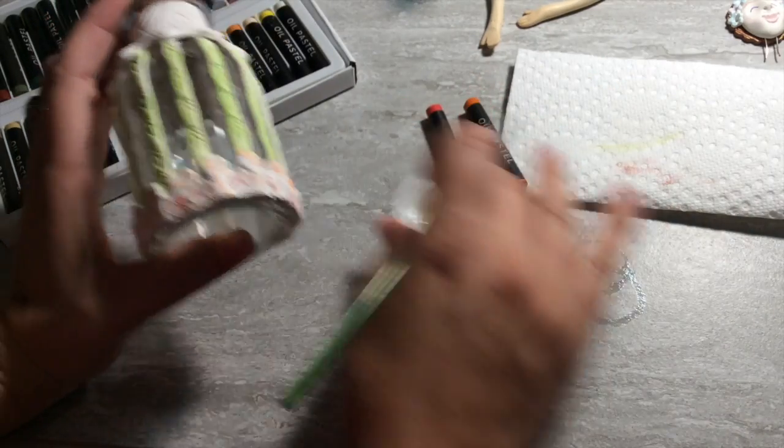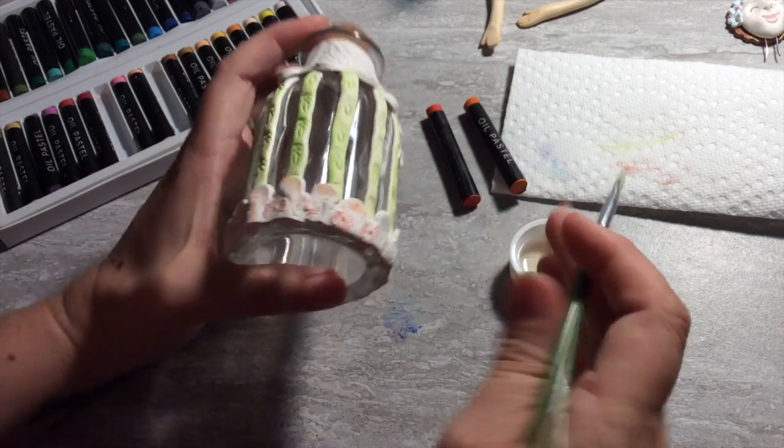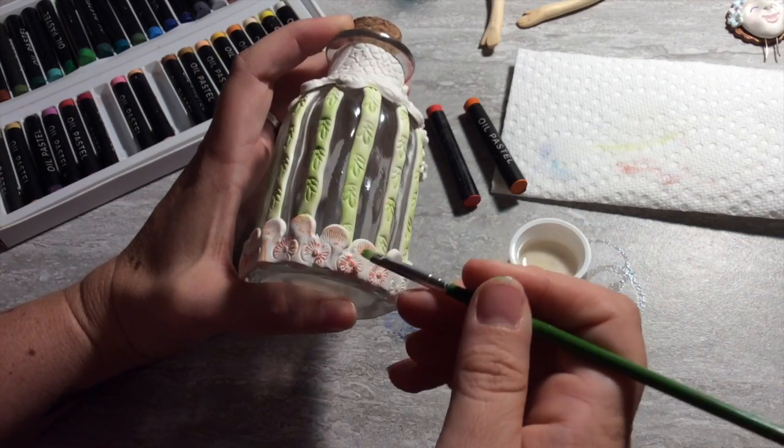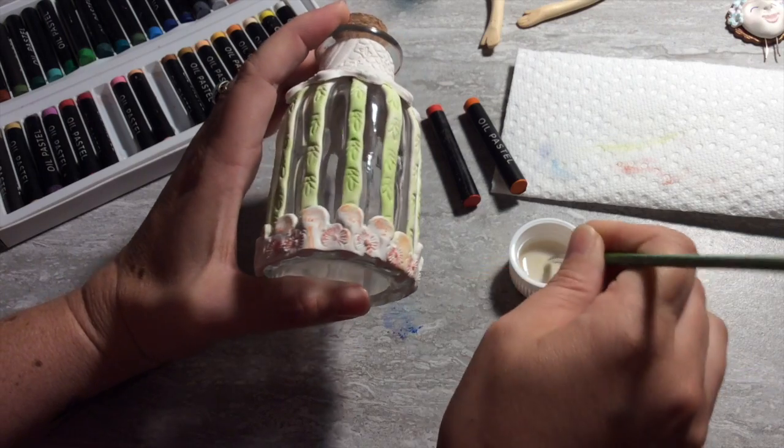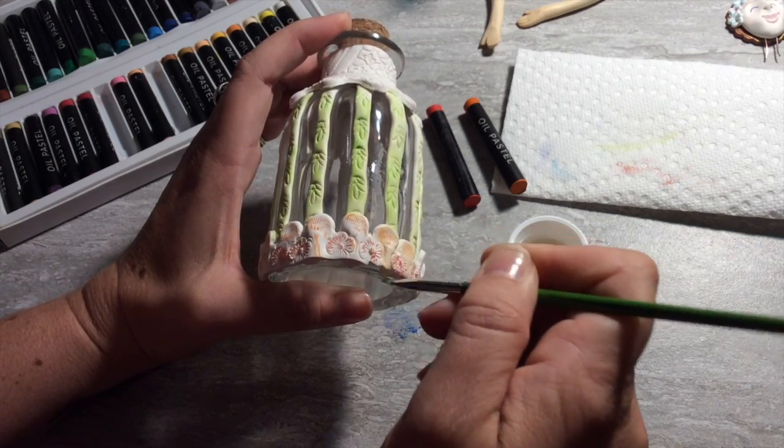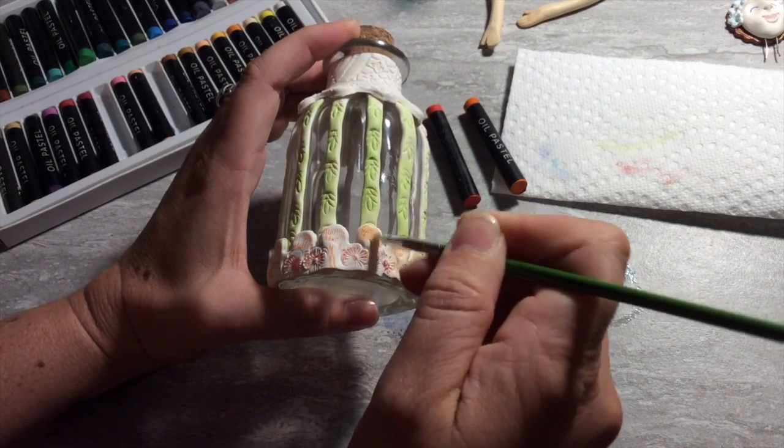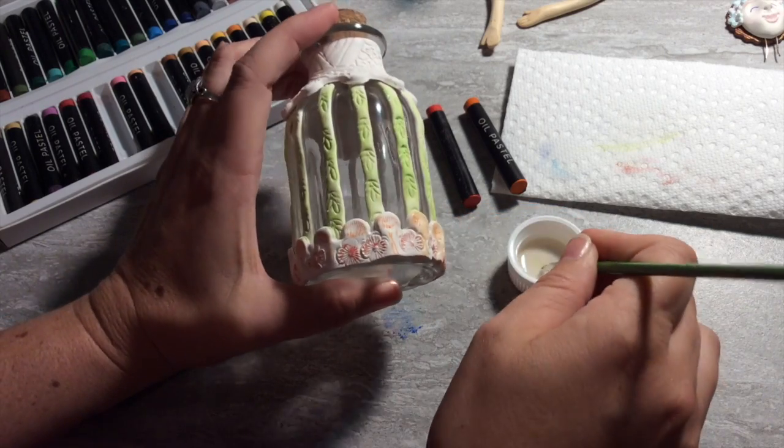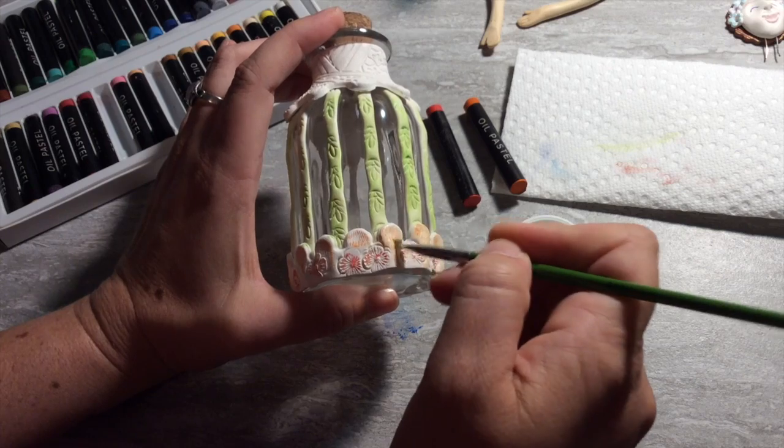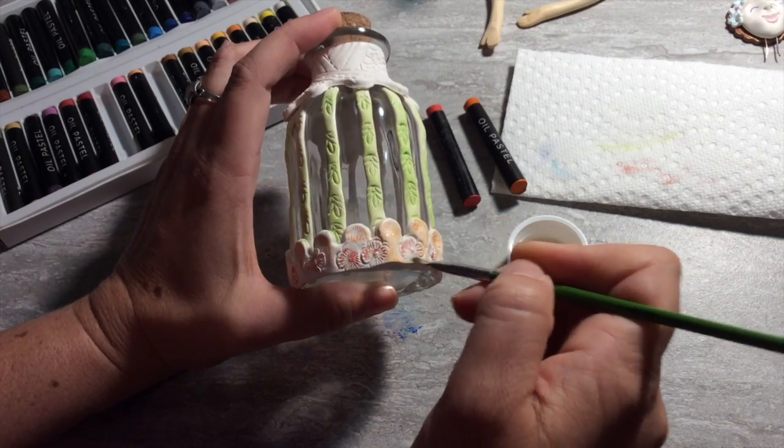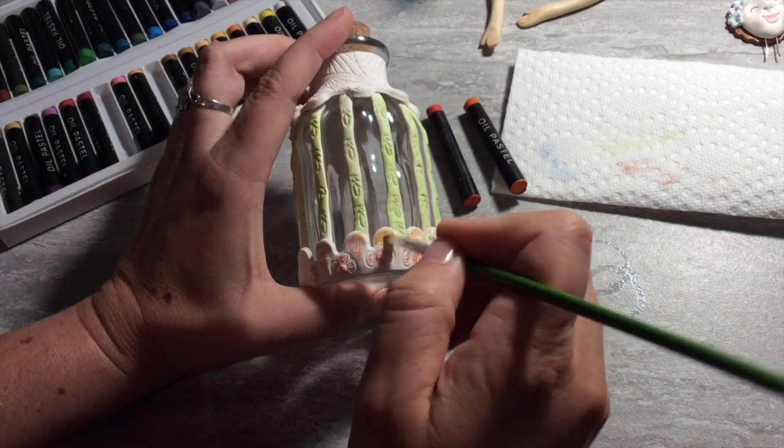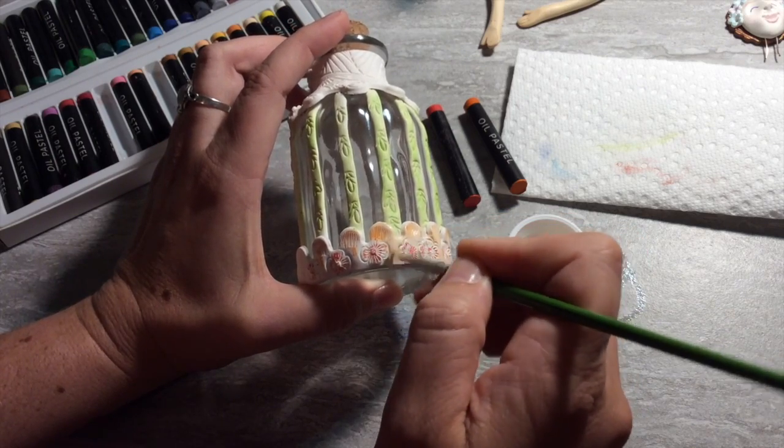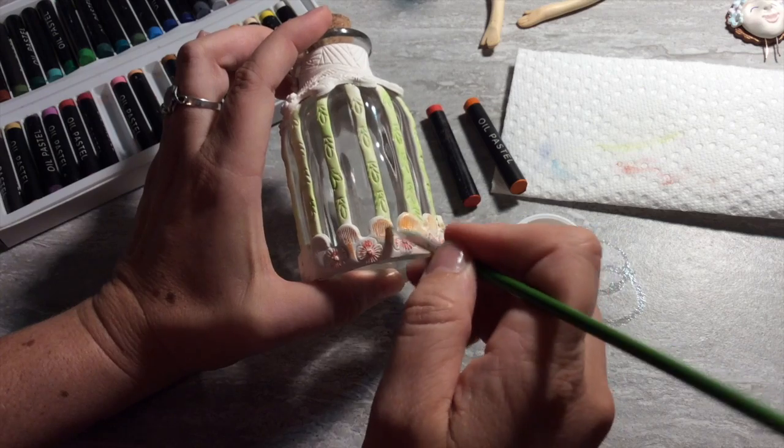And then grab your paintbrush that you just lightly touch into the mineral spirits so that you can grab that color and move it around. The mineral spirits will evaporate, leaving behind the color attached to your clay.